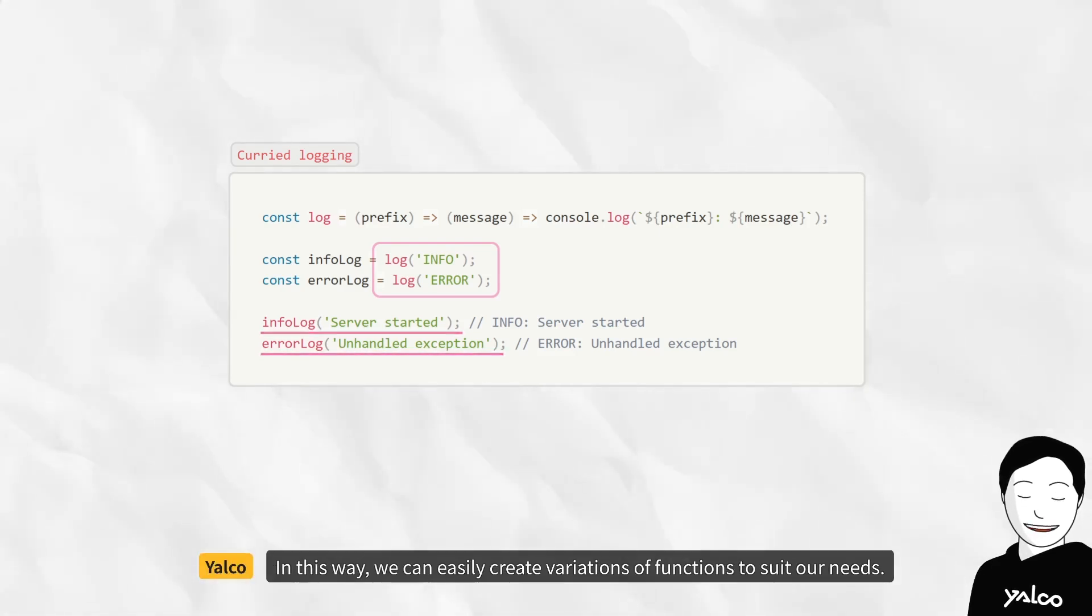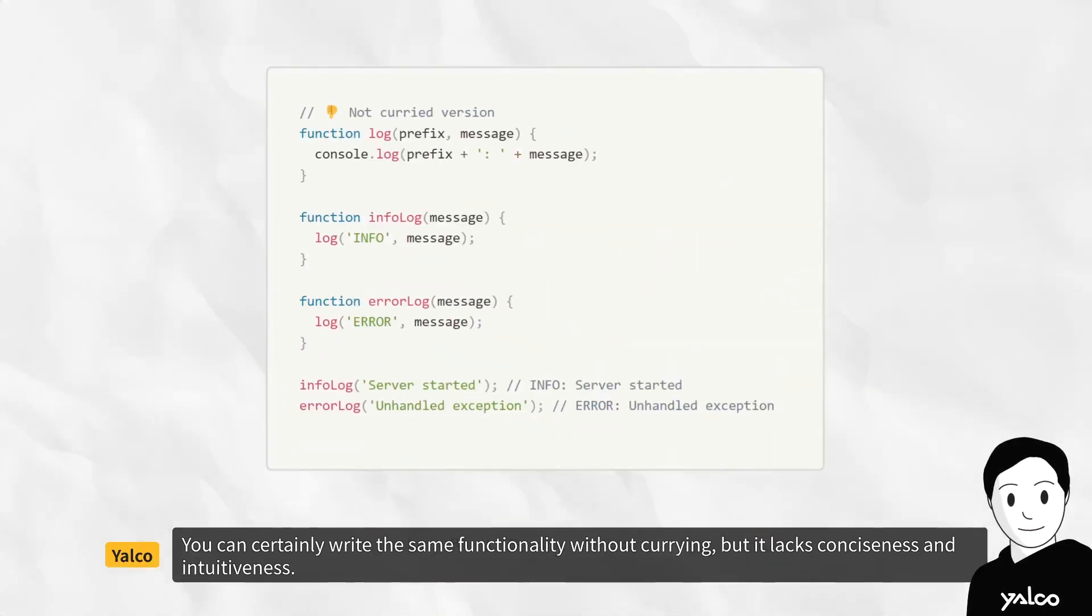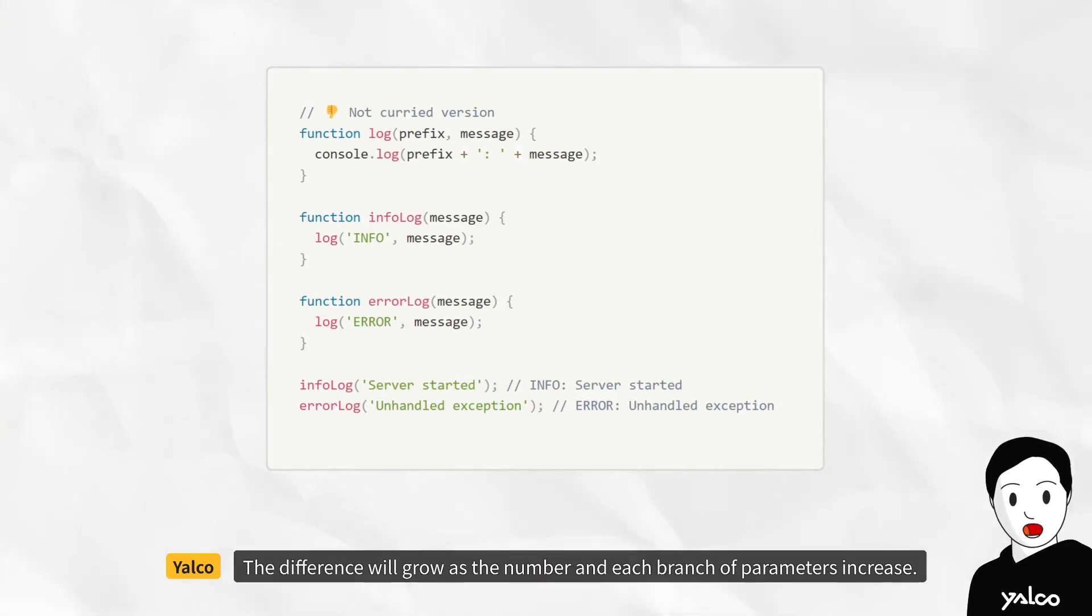In this way, we can easily create variations of functions to suit our needs. You can certainly write the same functionality without currying, but it lacks conciseness and intuitiveness. The difference will grow as the number and each branch of parameters increase.